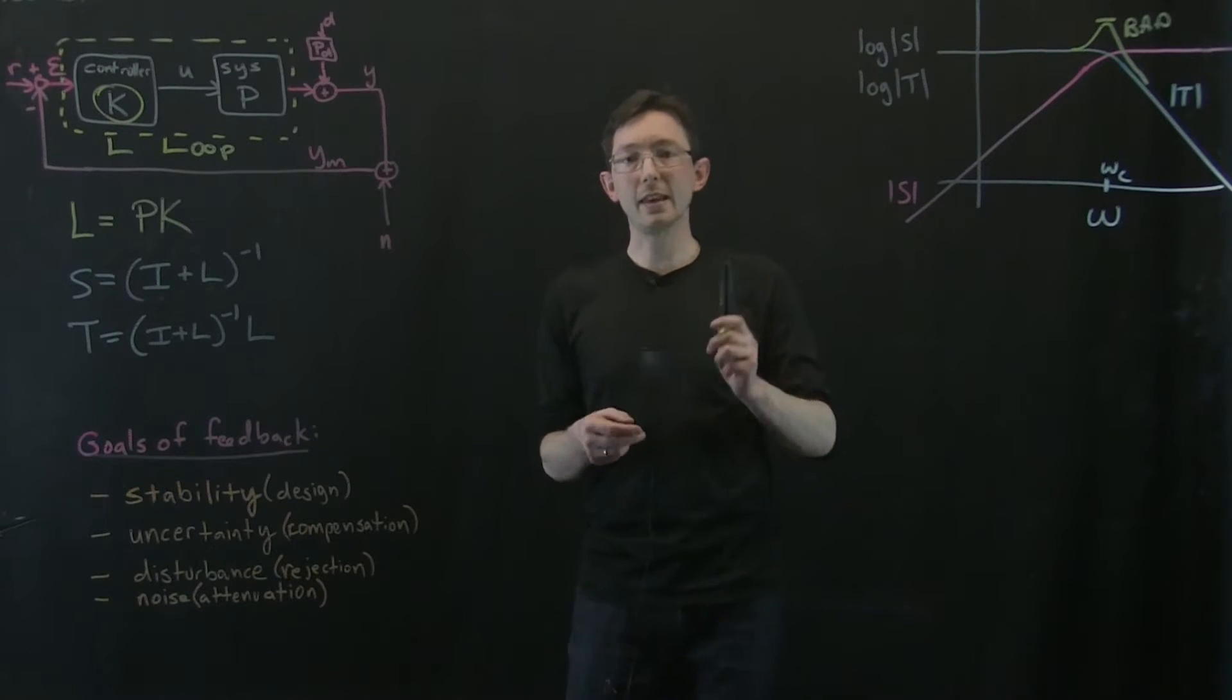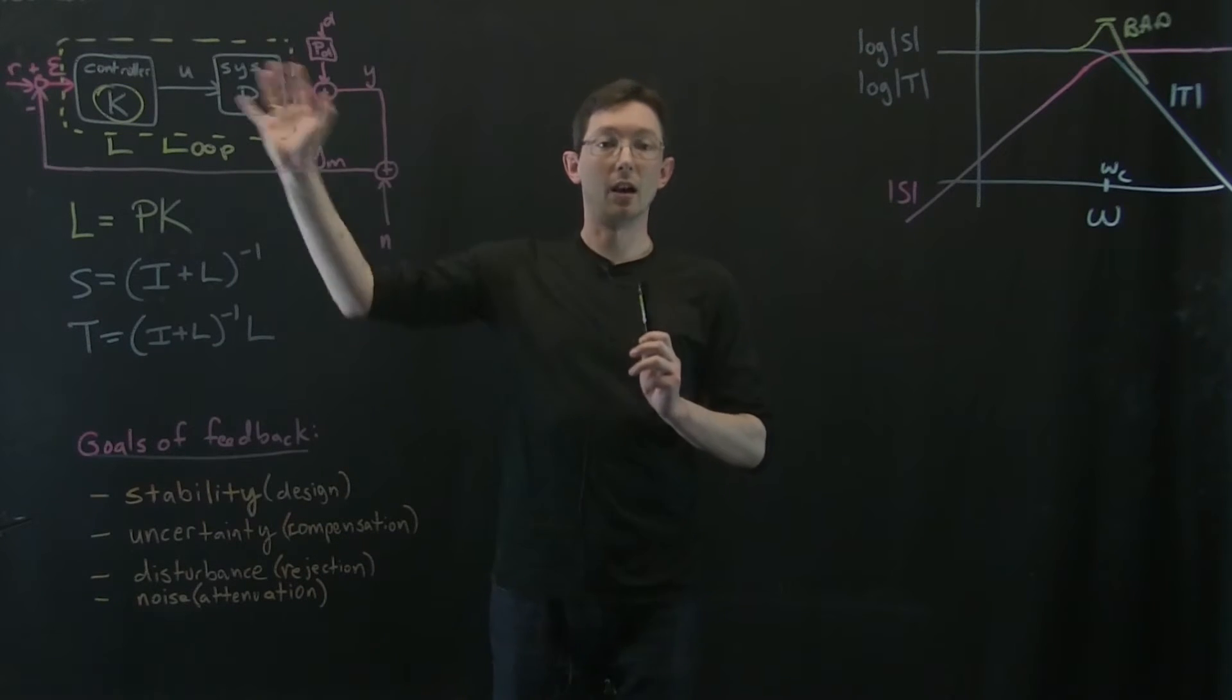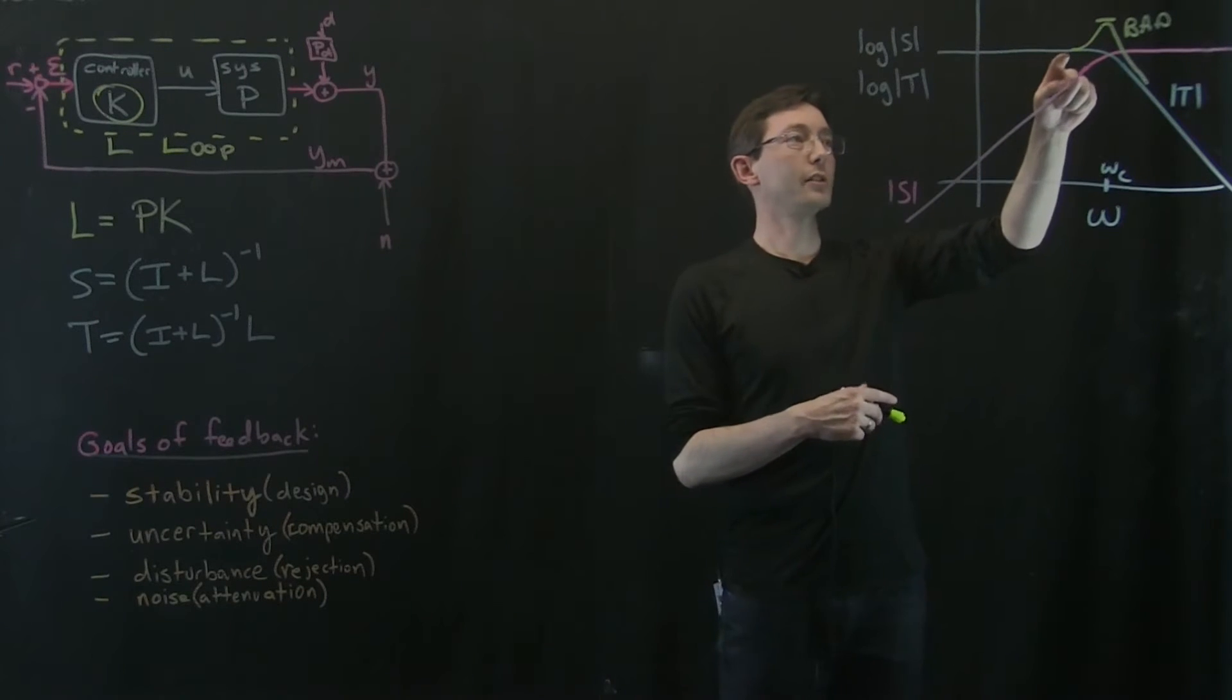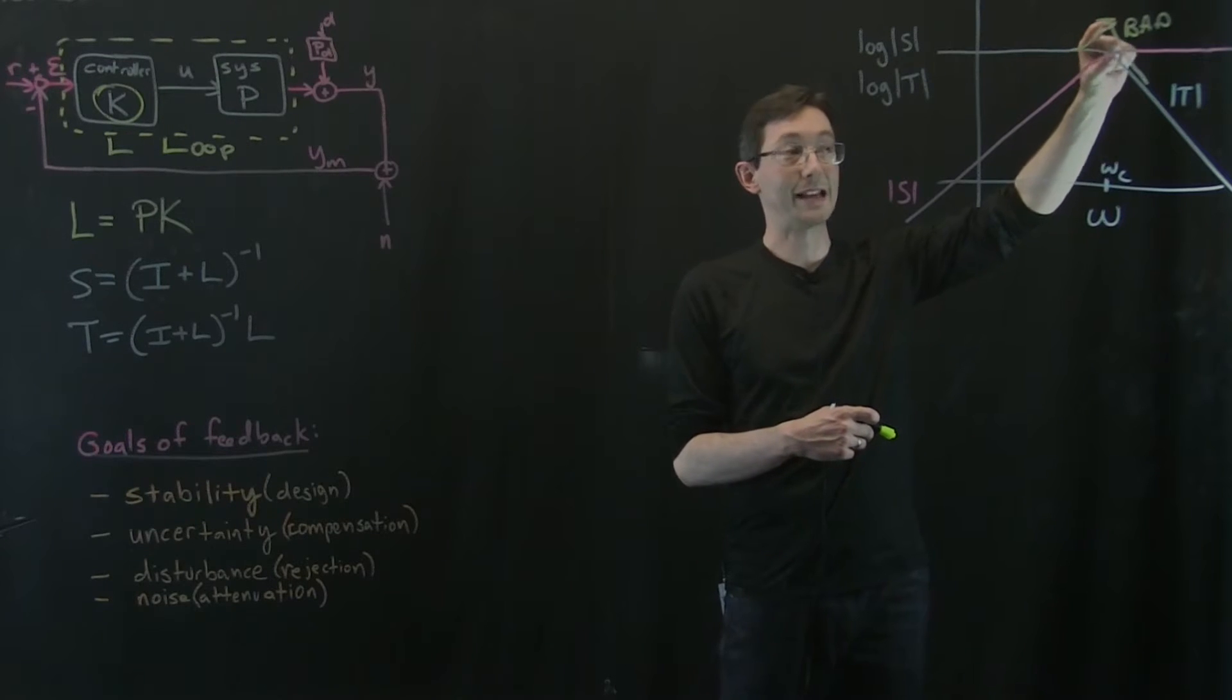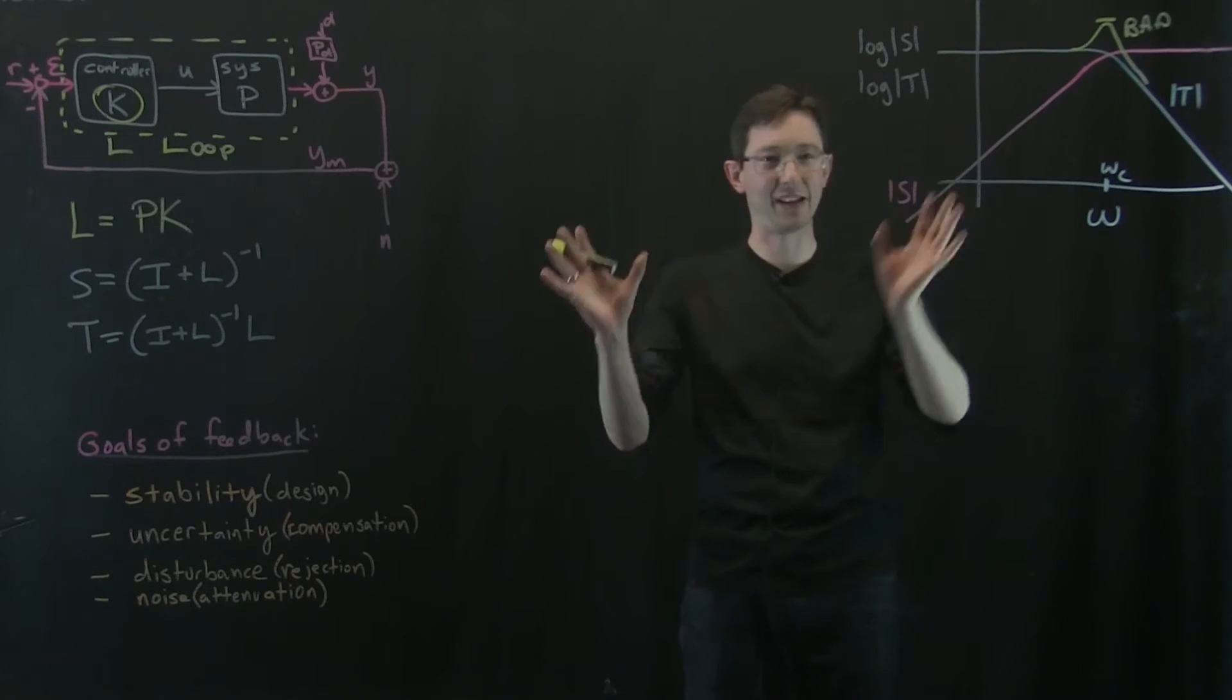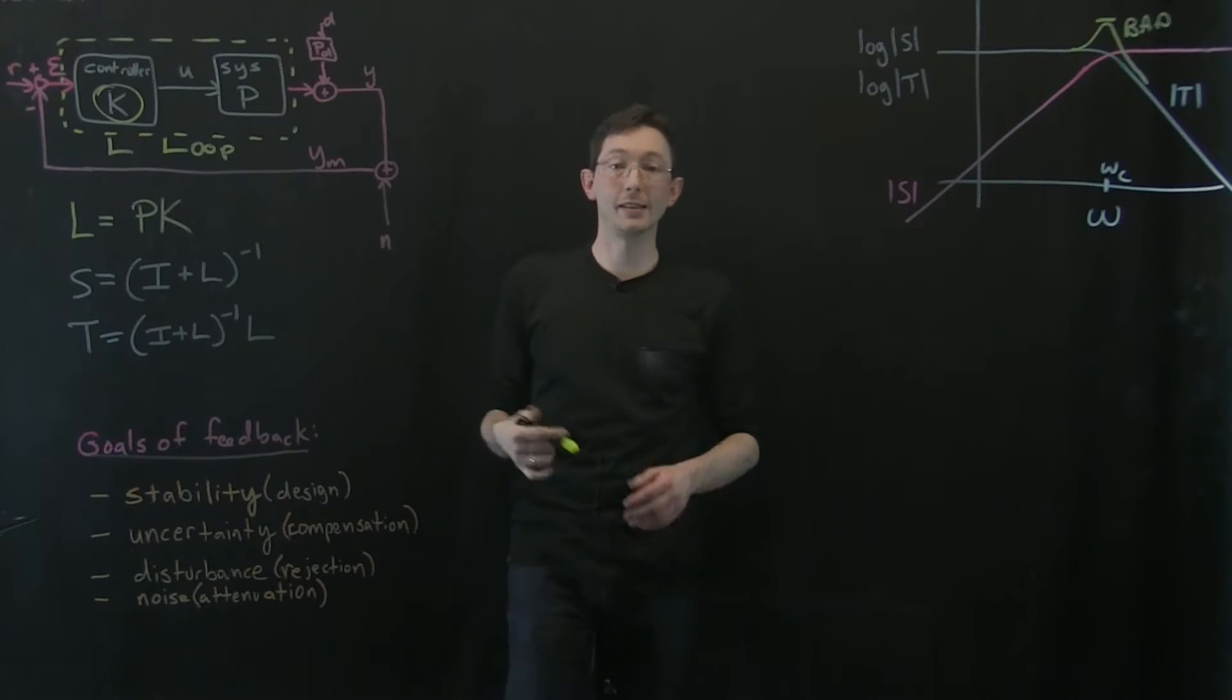But I said that the sensitivity function gives us a direct measure of the robustness of our system. And I also said that if I have a big peak in the magnitude of S, that's bad for robustness. So this is kind of a cartoon at this point, but I want to give you an idea of why this is the case.